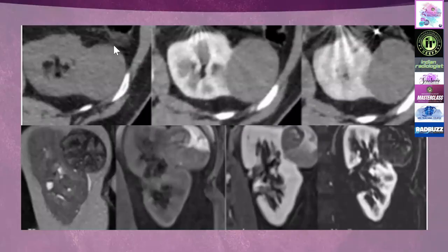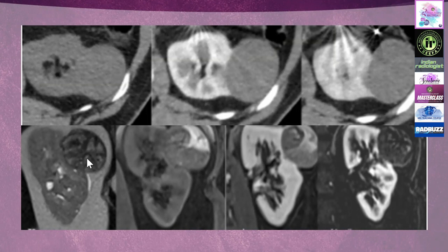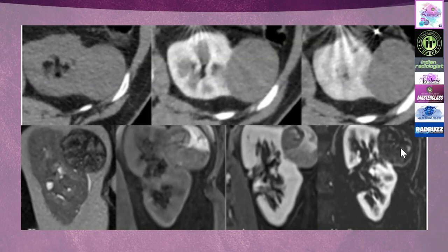Another lesion: on CT scan without contrast, arterial phase, and portal venous/nephrographic phase, we don't know whether this lesion is enhancing or not. On MRI, T2-weighted images show heterogeneity within the lesion. Pre-contrast images show an area of hemorrhage, and with IV contrast we don't know how much is enhancing. On subtraction images, you can clearly see low-level enhancement. This was another papillary renal cell carcinoma.